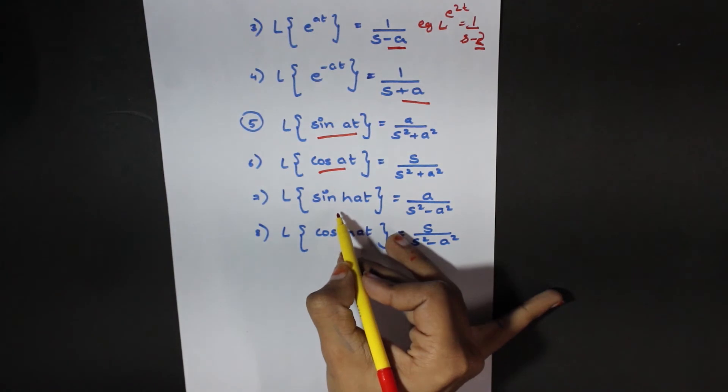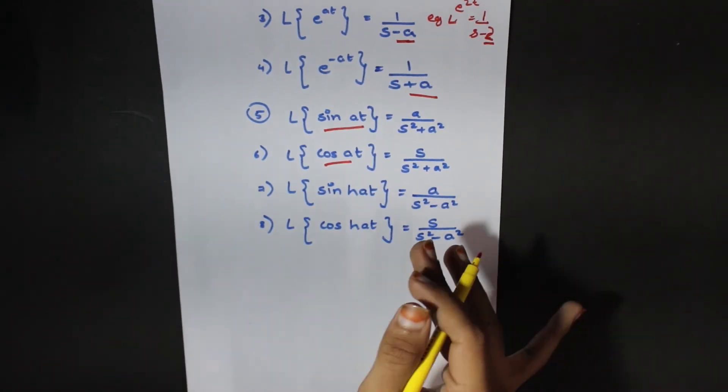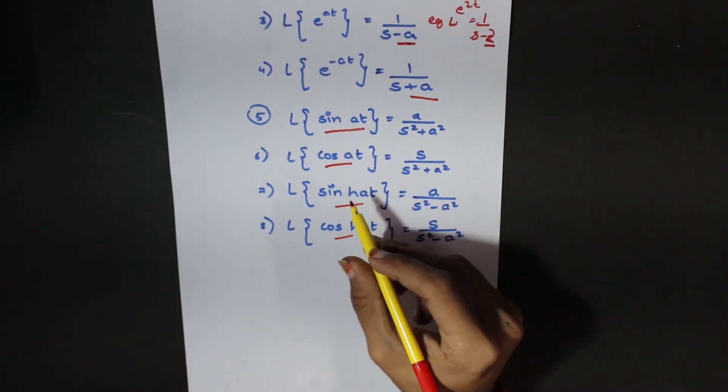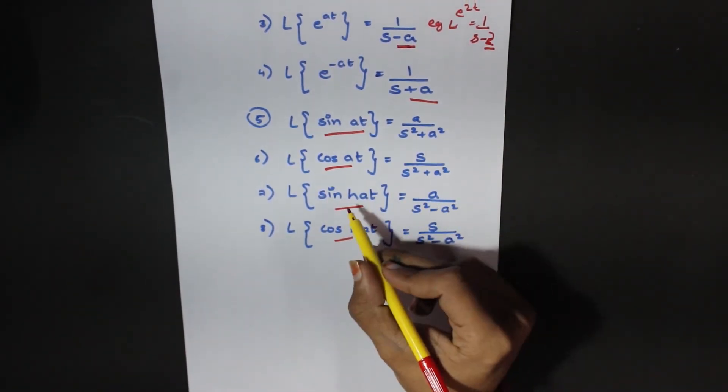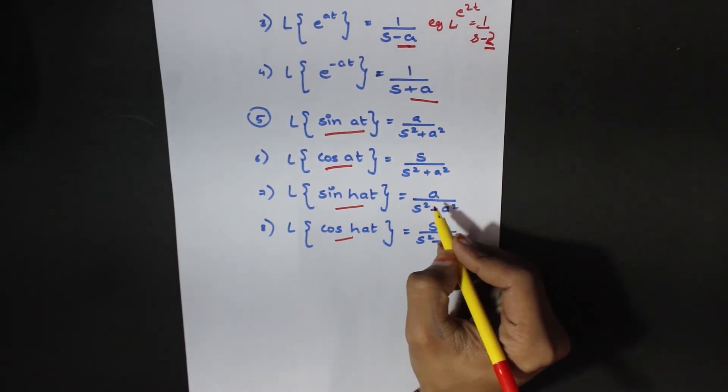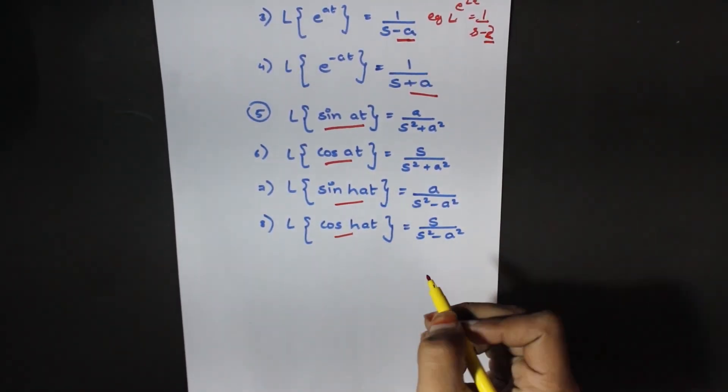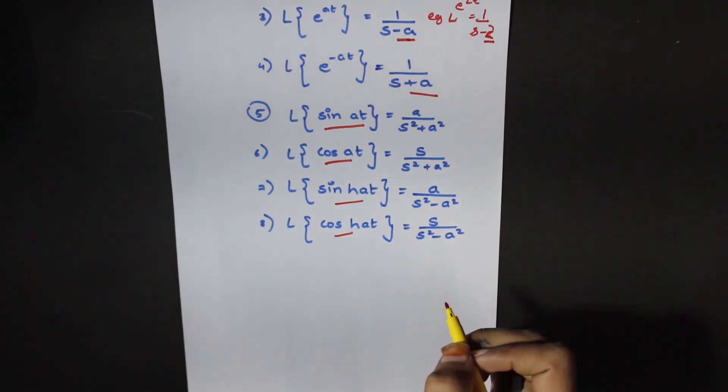Then we have hyperbolic functions. This is sine hyperbolic and cos hyperbolic. Laplace of sinh at is equal to a over s square minus a square. Laplace of cosh at is equal to s over s square minus a square.